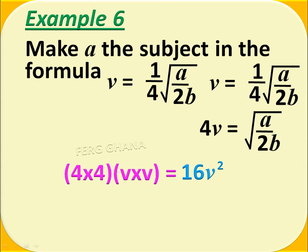Next, we have to square both sides. That gives us 4 times 4, which is 16, and v times v, which is v squared, equals a over 2b.